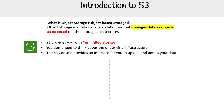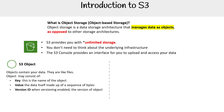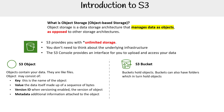Let's break it down and talk about the two most important components. We have S3 objects — these contain your data and they are like files. They consist of things like a key, which is the name of the object; a value, which is the sequence of bytes of the data; a version ID, if you have versioning turned on; and metadata. Then you have S3 buckets — these are what hold objects. Buckets can also have folders, which in turn hold objects.